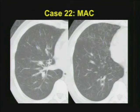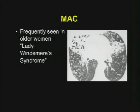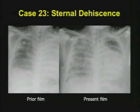Case number twenty-two — MAC: not the best example, but a reasonable example of endobronchial nodules. A better example of MAC shows lots of tree-in-bud type nodules with bronchiectasis in the middle lobe and lingula — classic clinical scenario: older patient, older women, the so-called Lady Windermere syndrome, with a chronic cough for months or years. Look for bronchiectasis and tree-in-bud classically in a middle lobe and lingular distribution — more common than typically appreciated.